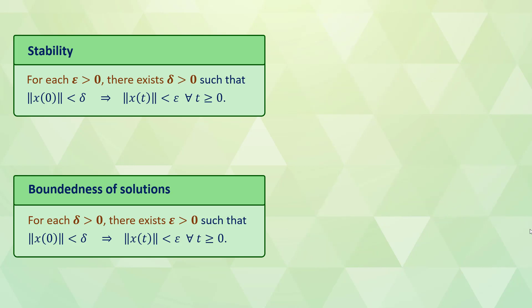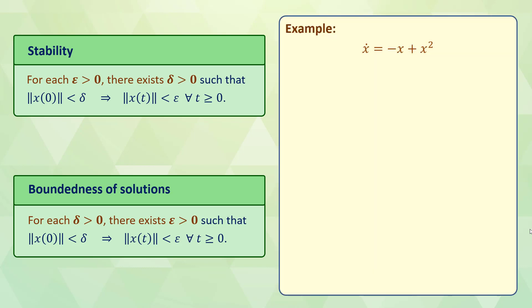We now consider two examples in which only one of the properties — boundedness of solutions and stability of an equilibrium point — holds. In the first example, we consider the nonlinear system x_dot = -x + x². This system has two equilibrium points at 0 and 1. We are interested in checking the stability of the equilibrium point at the origin. Since we haven't yet learned Lyapunov stability methods, we use the stability definition.